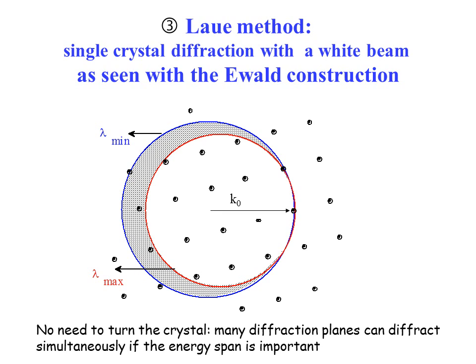Now let's turn to another diffraction method: the Laue method. In this case we use a white beam — a non-monochromatic beam having energies or wavelengths between a minimum and a maximum. In the Ewald construction, this gives two circles corresponding to the two extreme wave vectors. Without needing to rotate the crystal, a number of diffracting planes will satisfy the Laue condition — those in the region between the two circles — because the wavelength varies continuously between these two extremes.